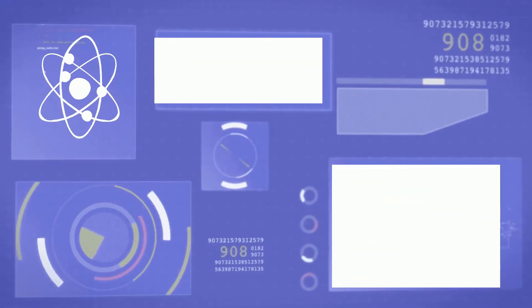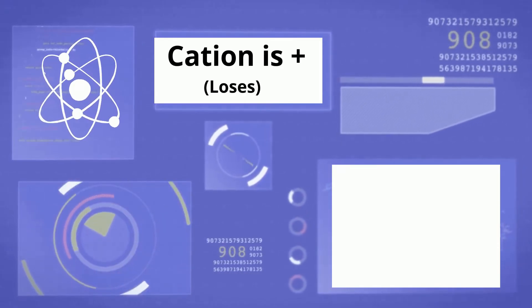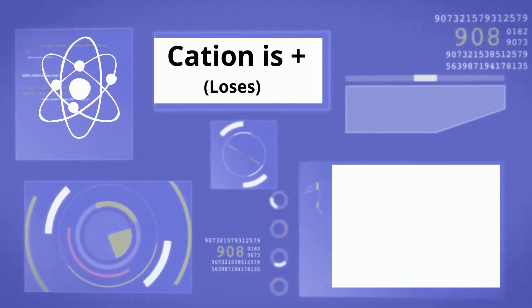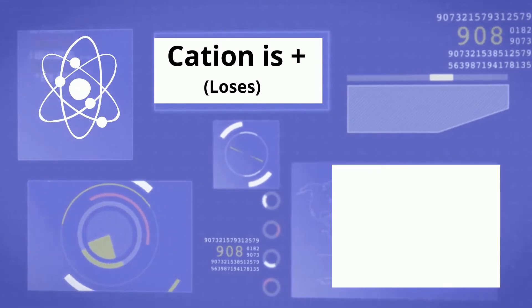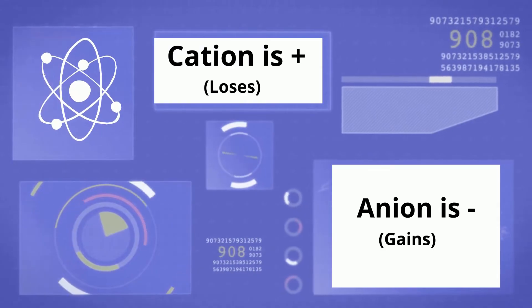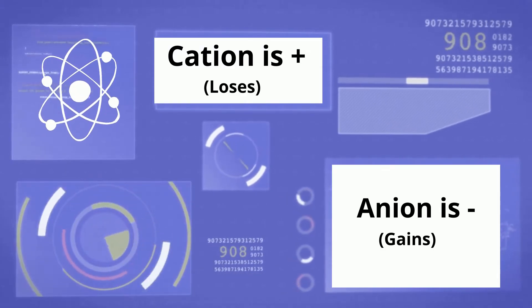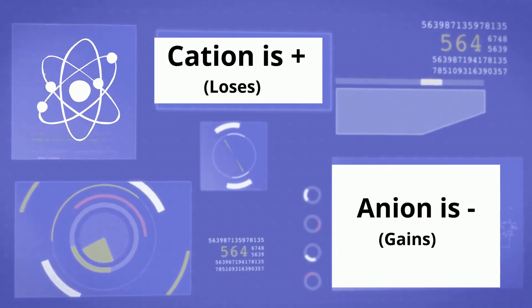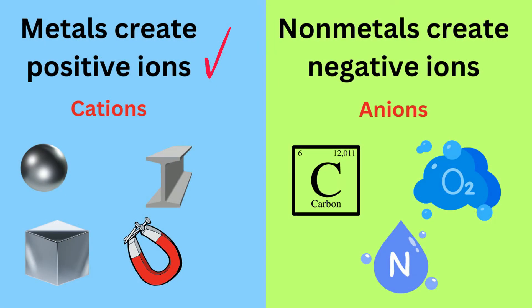To begin with, a cation is a positive ion formed when a neutral atom loses an electron. An anion is a negative ion created when a neutral atom gains an electron. Also remember, metals will always form positive ions, and non-metals will create negative ions.